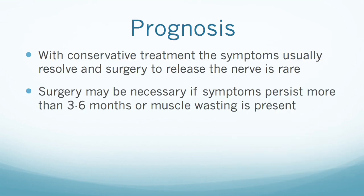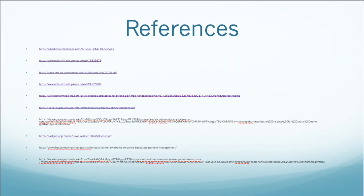The minimal clinically important difference of these scores ranges from 15.91 to 20 points. With conservative treatment, the symptoms of radial nerve entrapment usually resolve and surgery is not needed. Surgery may be necessary if symptoms persist for more than 3 to 6 months or muscle wasting is present.